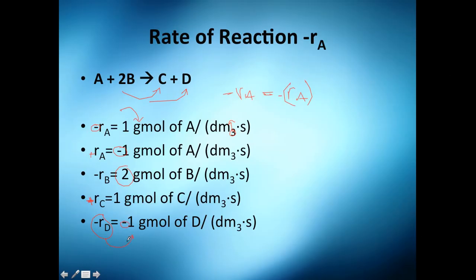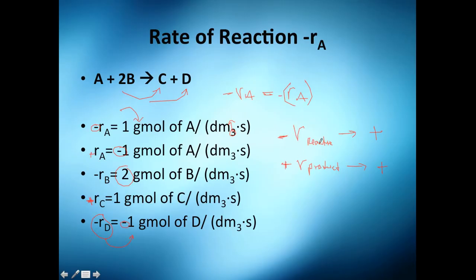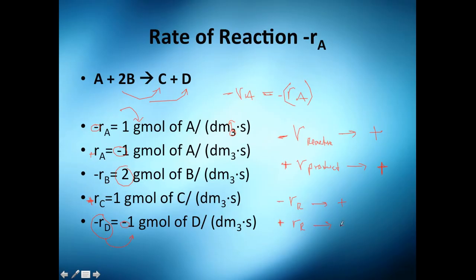To clarify: when I use R of A for a reactant, I'm talking about a positive number, and when I use R of A for a product, it's also positive. A negative sign means you are consuming a reactant — so minus R of a reactant gives a positive value. A negative rate of production for a reactant means it is being turned into a product.